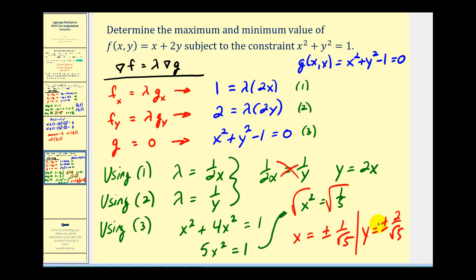Now that we know x, we can find y from y = 2x, so y = ±2/√5. This means we have four different points to consider, which we'll plug into our function f(x, y) = x + 2y on the next slide.